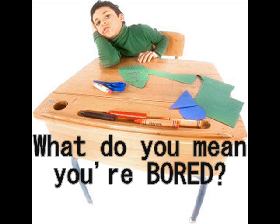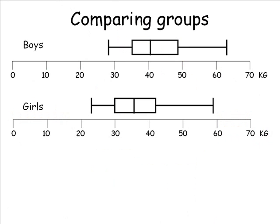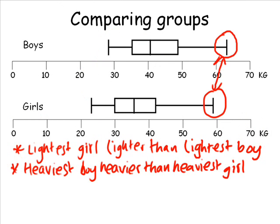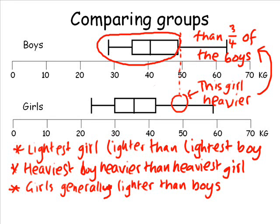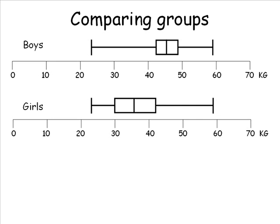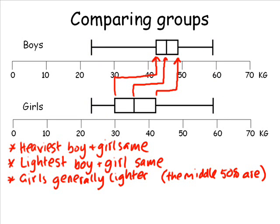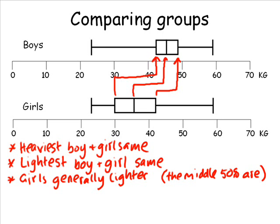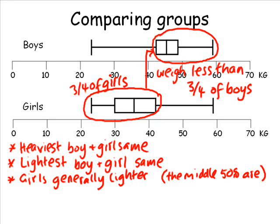The best thing about box plots is when you want to compare two groups of data. With only a few numbers in one simple diagram, you can really quickly get a feel for the differences between them. The whiskers show that the lightest girl is lighter than the lightest boy, and the heaviest boy is heavier than the heaviest girl. The box shows that the lower and upper quartiles and median are all lower for girls, so overall we can say that the girls are a bit lighter than the boys. Obviously some of the girls are heavier than some of the boys, but as a group, the girls are generally lighter. In a trickier example, the upper quartile for girls is about the same as the lower quartile for boys, so the middle half of the girls are all lighter than all of the middle half of the boys — three-quarters of the girls weigh less than three-quarters of the boys.